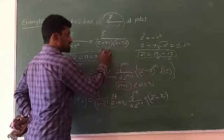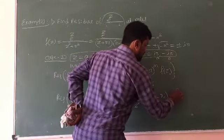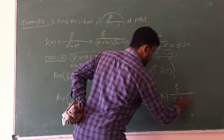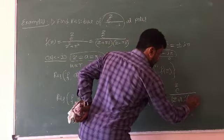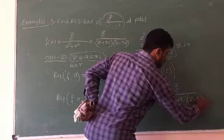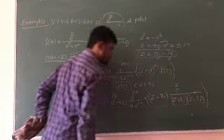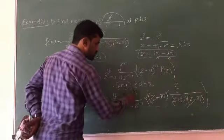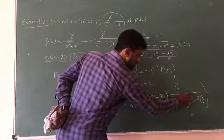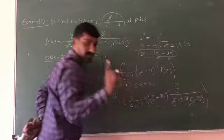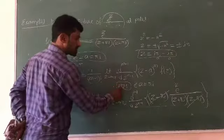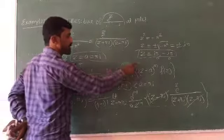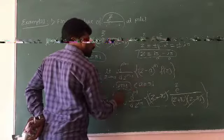Substituting f(z), we get the limit as z tends to i pi of: (z minus i pi) times e raised to z, divided by (z plus i pi)(z minus i pi). The (z minus i pi) terms cancel. So we are left with the limit as z tends to i pi of e raised to z divided by (z plus i pi). Since m equals 1, d raised to 0 is just 1, so we apply the limit directly.